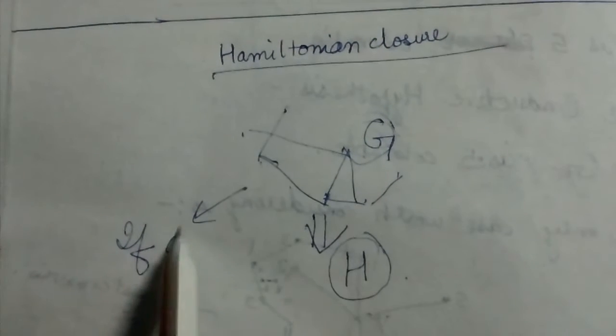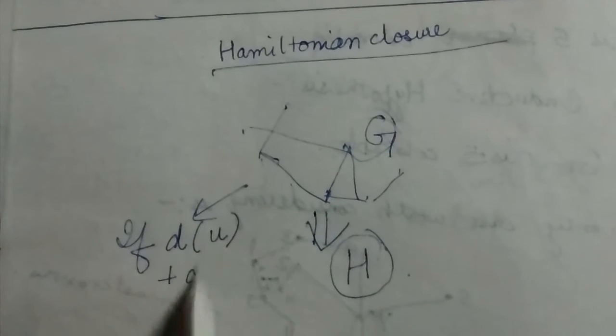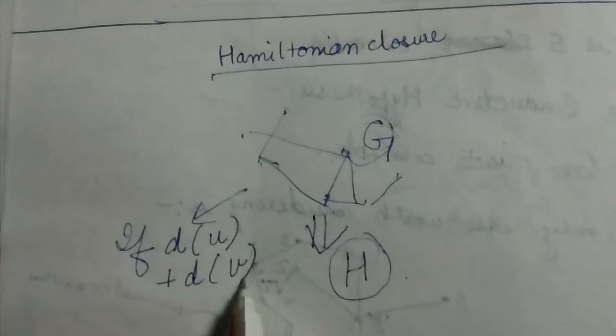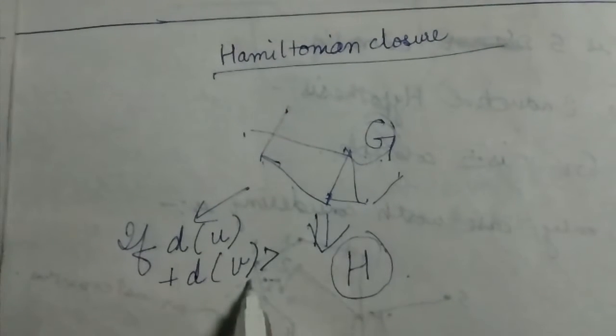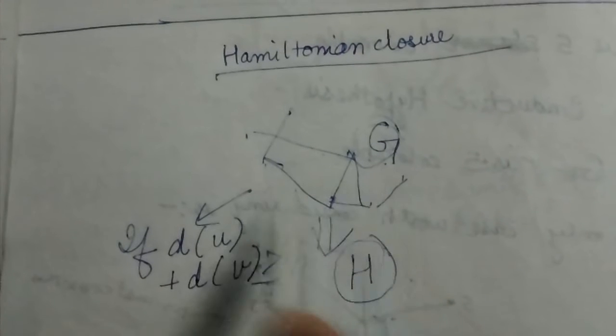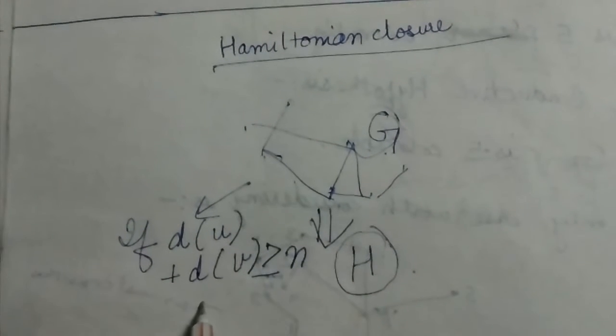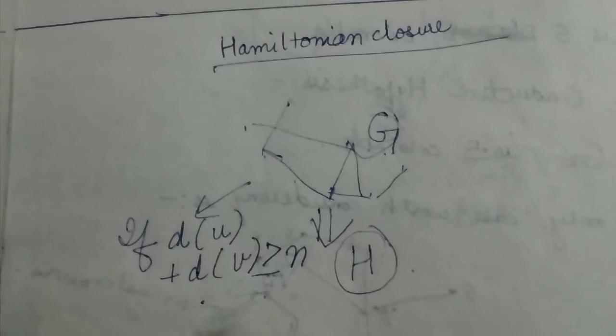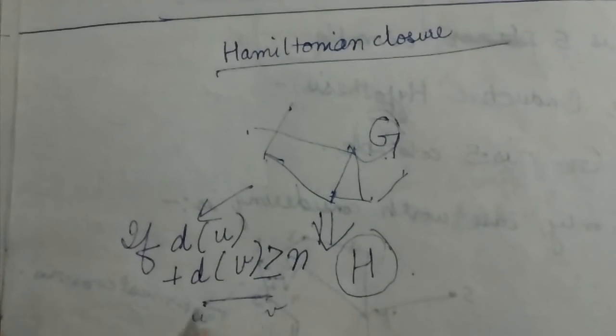If the degree of a vertex u plus degree of a vertex v in the current graph is greater than or equal to n, where n is the total number of vertices in the graph, then we add an edge between the vertices u and v in the graph. So this edge is added. This is the freshly added edge.